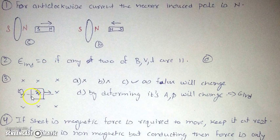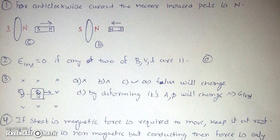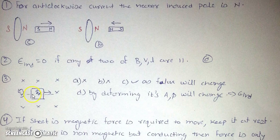Assuming it's a circular loop placed in a uniform magnetic field directed into the plane of paper: if it is translated and remains in the magnetic field region, there is no induced EMF. If it is rotated about its own axis there is also no induced EMF, as the flux does not change. But if it is rotated about its diameter (option C), the flux will first increase then decrease, producing an alternating AC EMF. By deforming the loop, the area changes so induced EMF also occurs. So C and D are the answers.